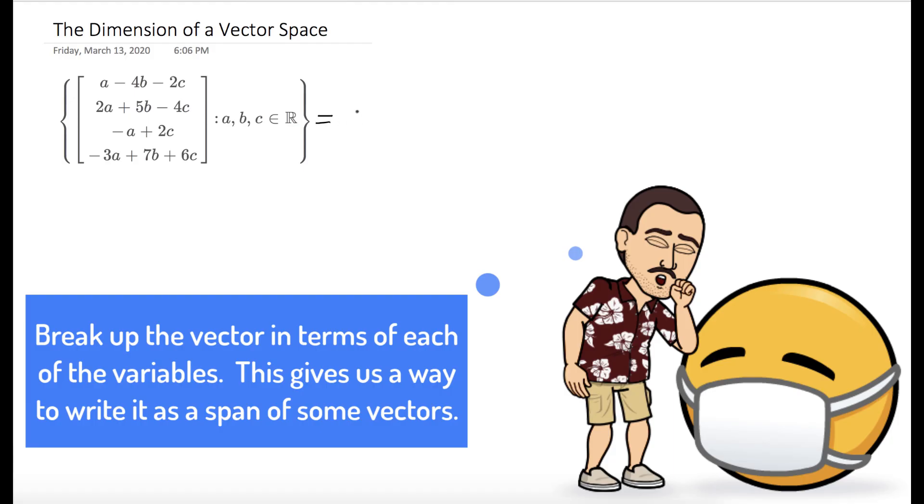So our subspace, we could write as the span of these three vectors. The first vector is the coefficient of all the a's. The second vector is the coefficient of all the terms with b. And our last vector would be the coefficients of all the terms with c. And if there was more scalars, there'd be more vectors here.